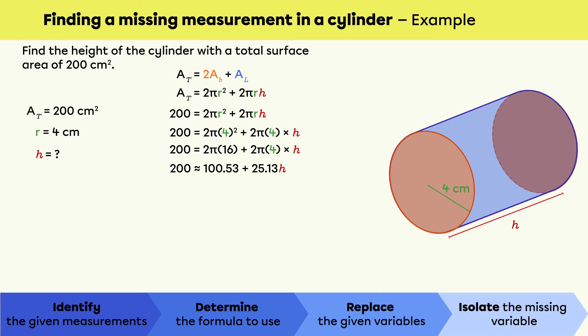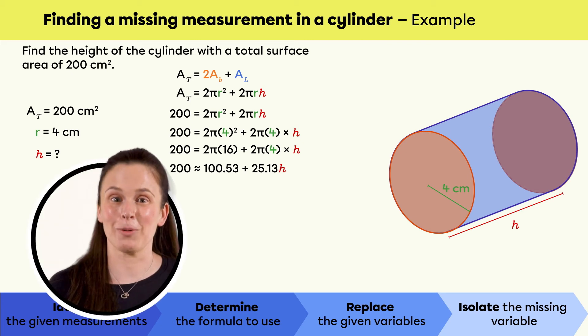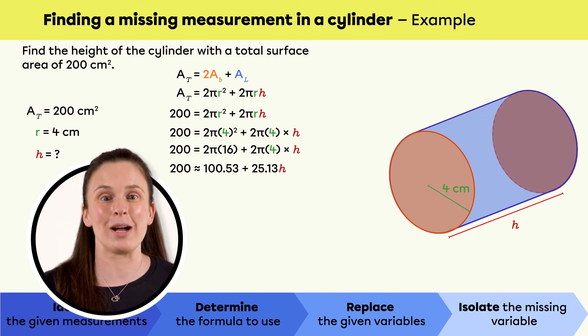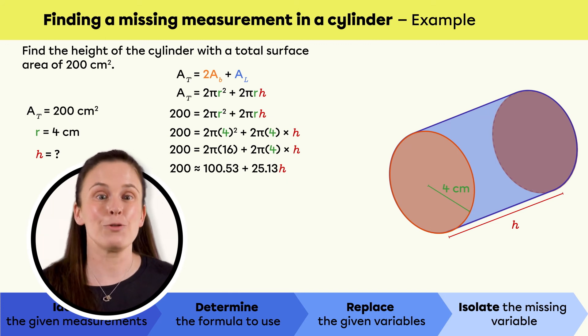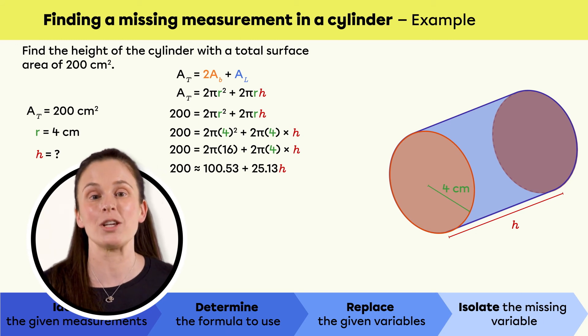We will need to isolate it in order to find its value. Remember, to isolate a variable, we have to remove all the numbers around it one by one. If we do an operation on one side of the equal sign, we must do the same operation on the other side to keep the equation balanced.